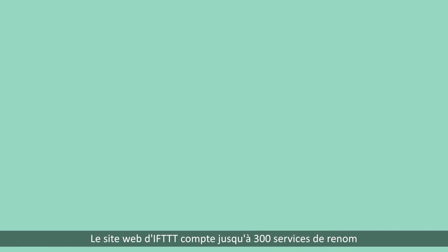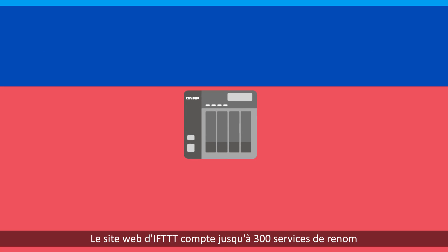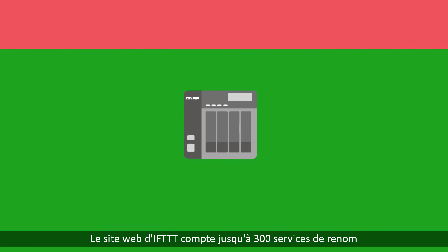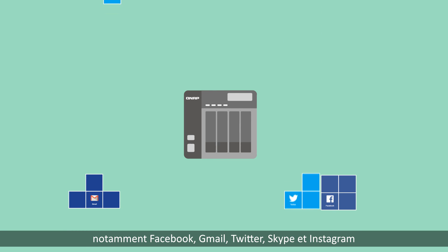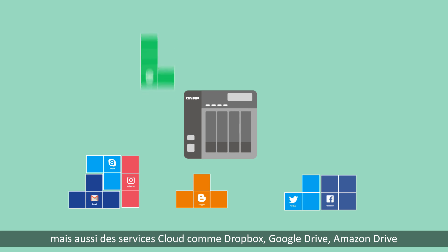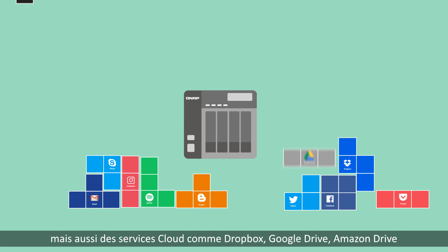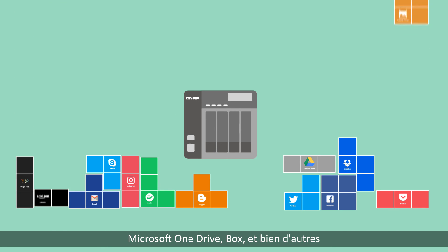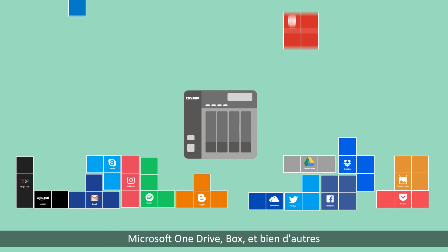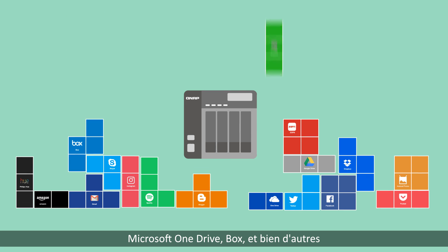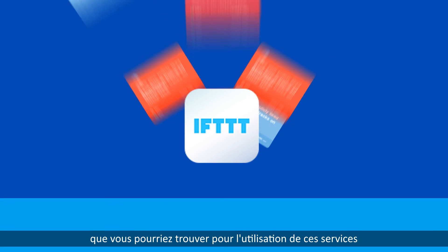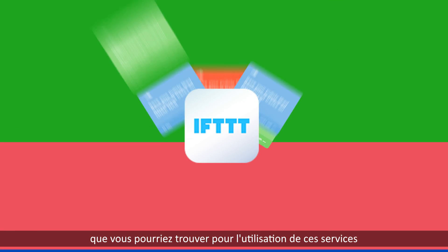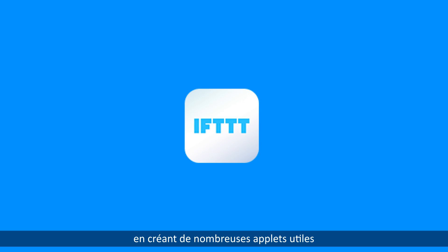There are up to 300 popular services on the IFTTT website, like Facebook, Gmail, Twitter, Skype, and Instagram, and cloud services including Dropbox, Google Drive, Amazon Drive, Microsoft OneDrive, Box, and more — making QNAP NAS the most flexible and smart helper by creating numerous useful applets.